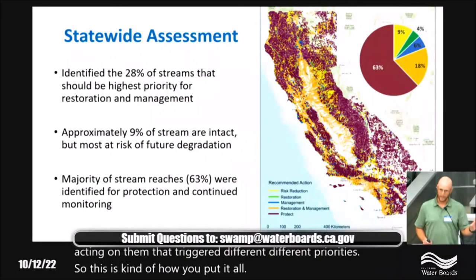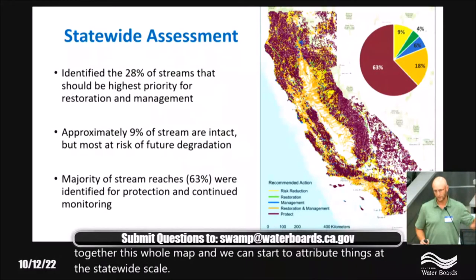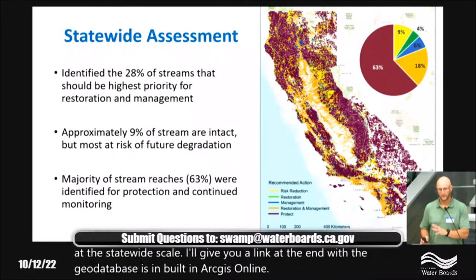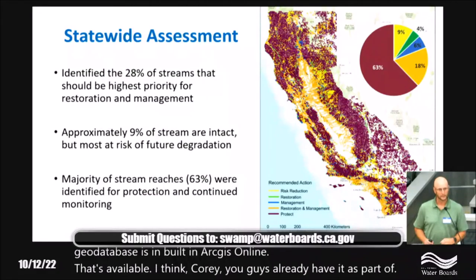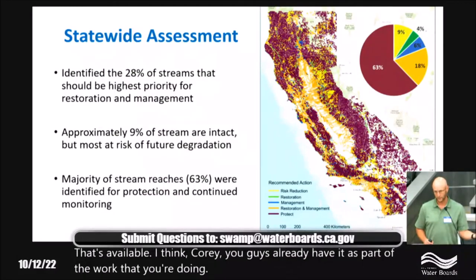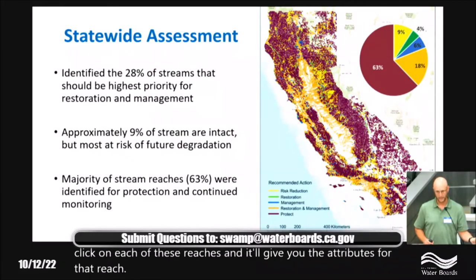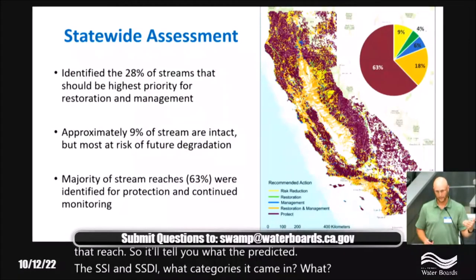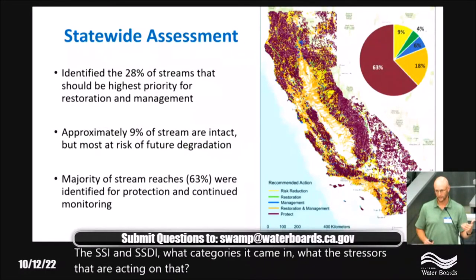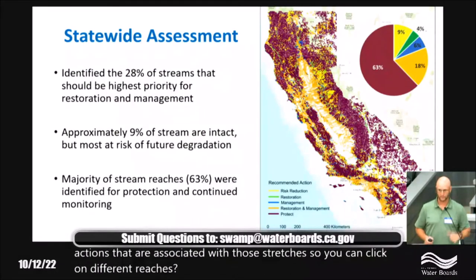We can put this together at the statewide scale. There's a geodatabase built in ArcGIS Online that's available. You can click on each reach and get its attributes — the predicted CSCI and ASCI, what category it falls in, the stressors acting on it, and the management actions associated with that reach.